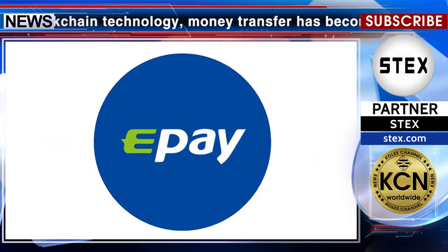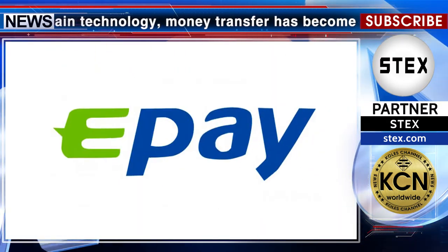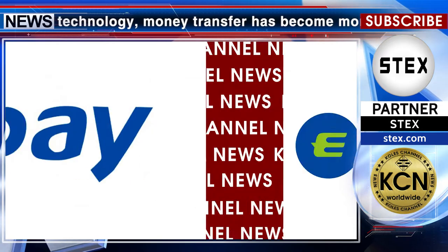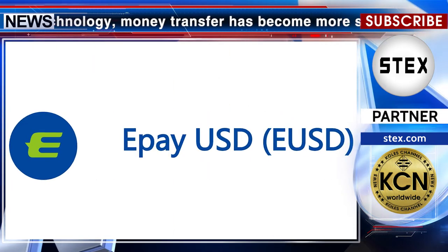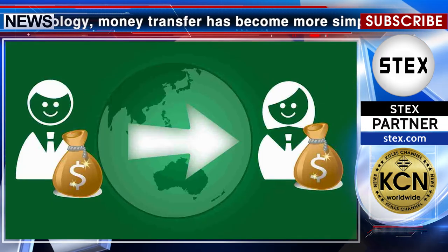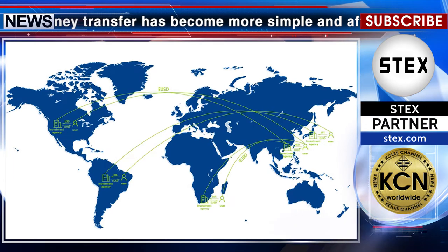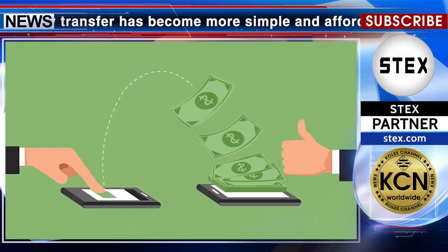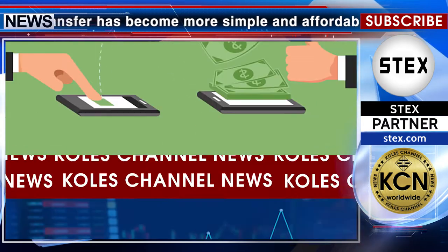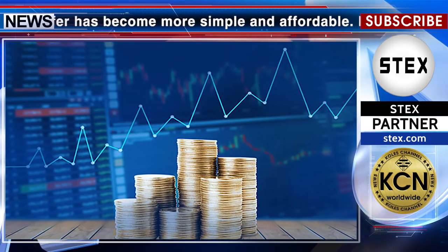ePay provides a wide range of functions for its customers. EUSD is playing a core role in a complete application scenario of the Global Remittance Network. Remitters and exchangers from all over the world can remit, exchange, and make other transactions through ePay Global Remittance Network.